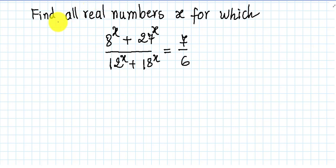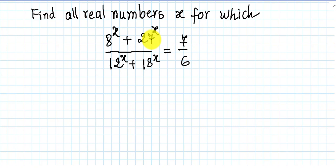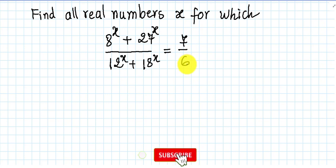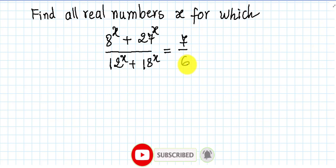Hello everyone. Welcome to Education K-HNA. Today I have one exercise on screen. Find all real numbers x for which 8^x plus 27^x over 12^x plus 18^x equals 7 over 6. Before we go to the solution, please subscribe, like, and share this video for more videos to study.